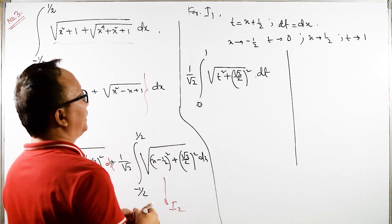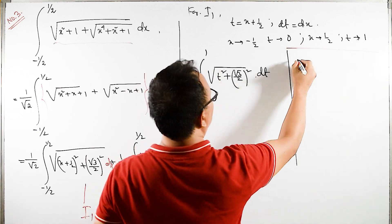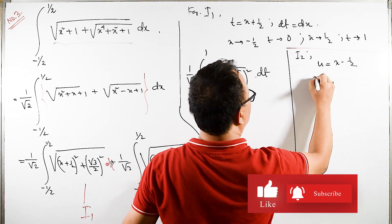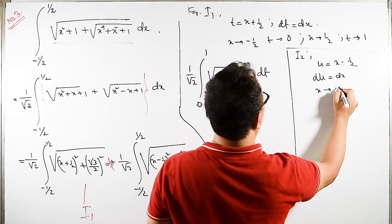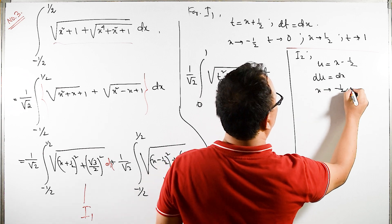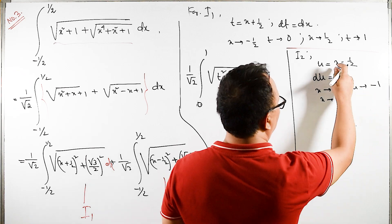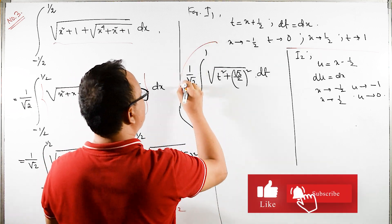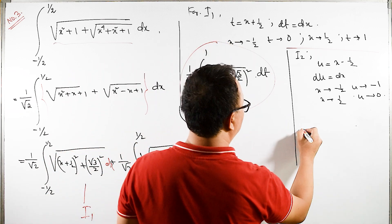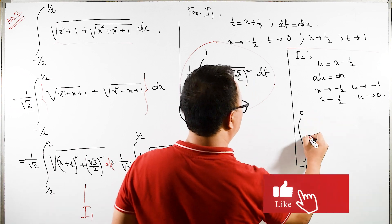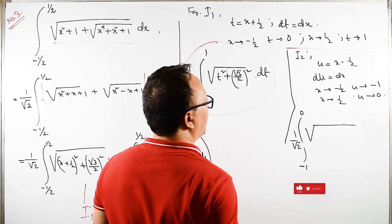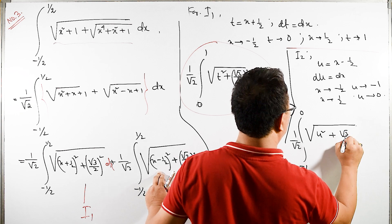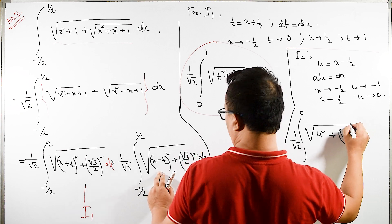For I2, let u equals x - 1/2, then du equals dx. When x tends to -1/2, u tends to -1; when x tends to 1/2, u tends to 0. So I2 equals (1/√2)·∫ from -1 to 0 of √(u² + (√3/2)²) du.